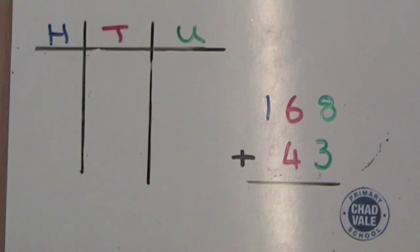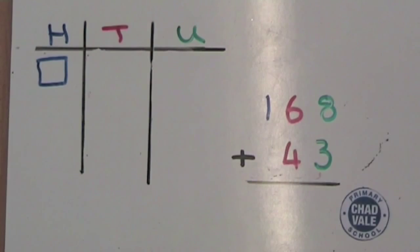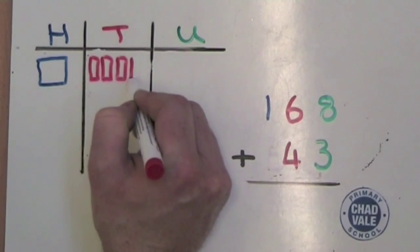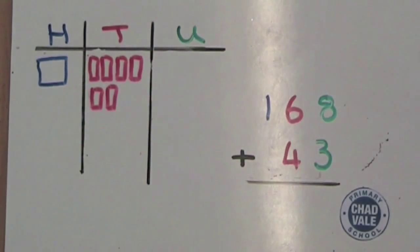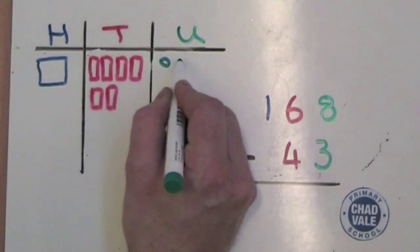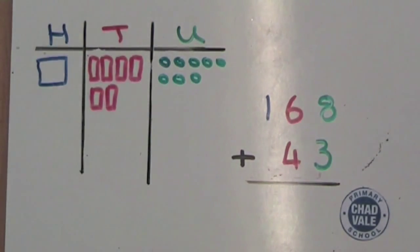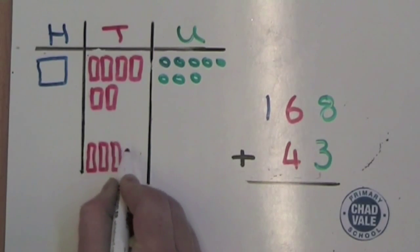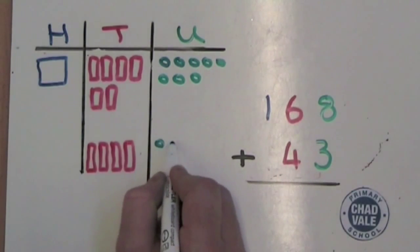Firstly, we need to draw 168, which is 100, six tens, and eight units. We then need to draw 43 underneath, four tens, and 3 units.